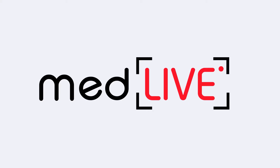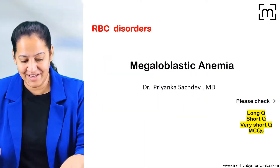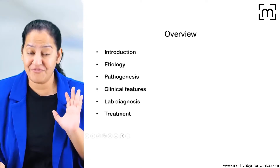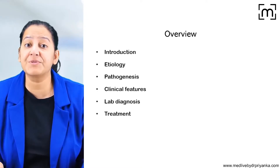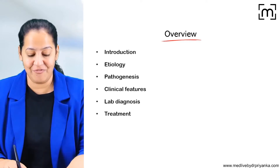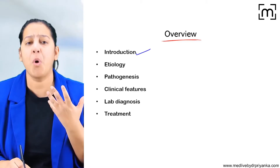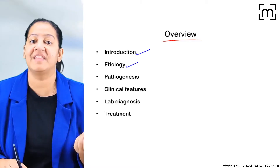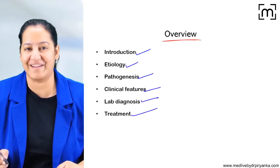Hello everyone. Here we are going to discuss a very important topic: megaloblastic anemia. You frequently get a long question on megaloblastic anemia in your university exam. You have to write down everything about it — starting from introduction, etiology, pathogenesis, clinical features, lab diagnosis, and treatment. So we are going to discuss everything here. First, learn the overview — under what headings you have to describe your answer. I will cover introduction, etiology, pathogenesis, clinical features, lab diagnosis, and finally treatment.